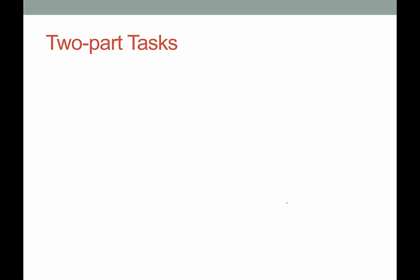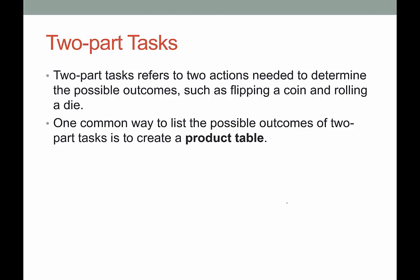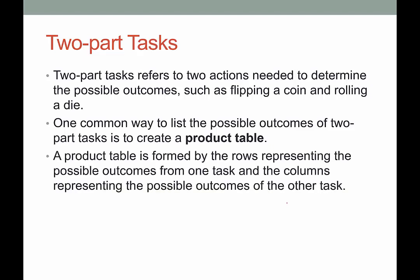Going a little bit trickier, we're going to talk about two-part tasks. One-part tasks — that was it, we're all experts at those. Two-part tasks are a little more involved; this means we have two actions to determine the possible outcome, like flipping a coin and rolling a die. We want to make sure we keep our information organized so we don't repeat or forget any possible outcomes. One way to organize information for two-part tasks is called a product table, formed by rows representing the possible outcomes from one task and columns representing the possible outcomes from the other task.